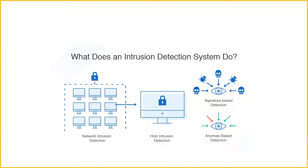The next is hybrid detection. The hybrid IDS uses both signature-based and anomaly-based detection. This enables it to detect more potential attacks with a lower error rate than using either system in isolation.